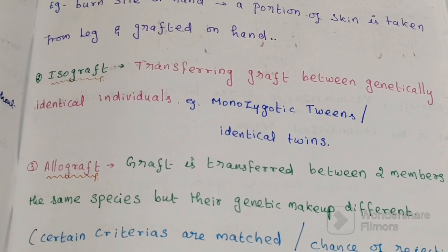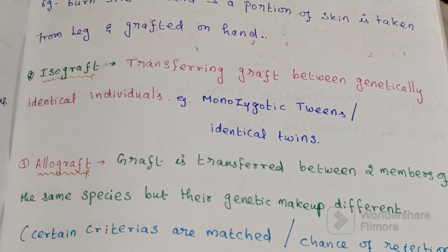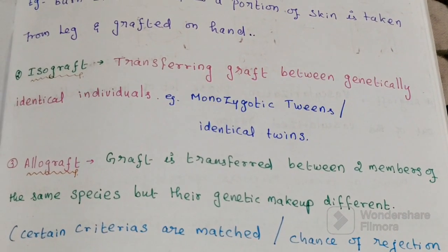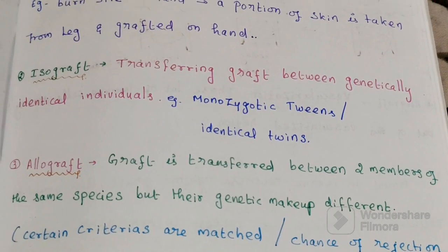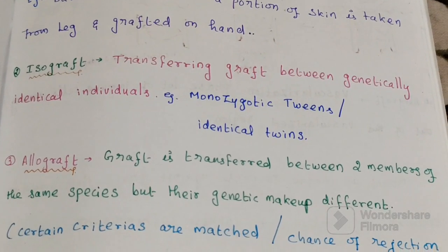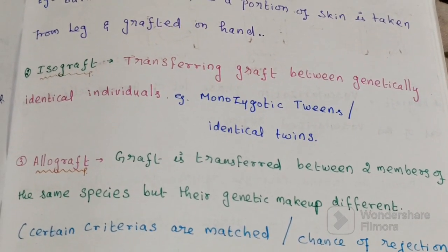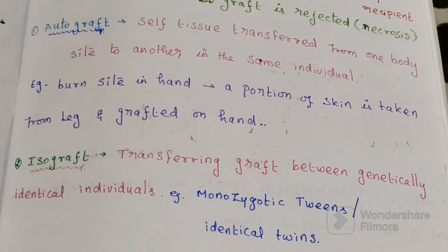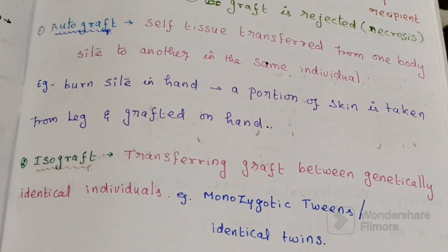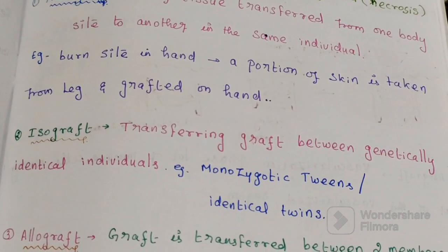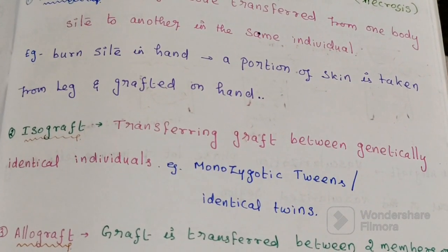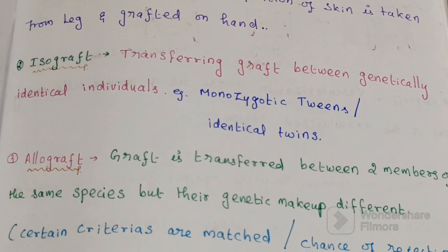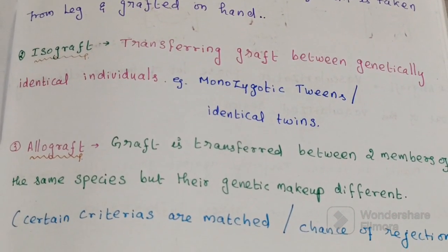Unless or until certain criteria are matched, there are two possibilities for an allograft: whether it is rejected or accepted. To summarize: autograft means the same individual, one location to another. Isograft means identical twins. Allograft means same species — human to human transfer.